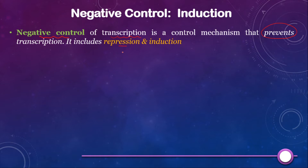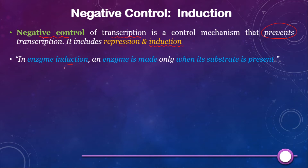The first mechanism is repression, which we have already studied in the previous video — a link will be provided in the description box. Today we will study the second mechanism of negative control, which is induction. In this mechanism, an enzyme is made only when its substrate is present. This seems to be the opposite of repression — in repression the enzyme was made when the substrate was absent, but in induction the enzyme is made when its substrate is present because these enzymes have a catabolic role.